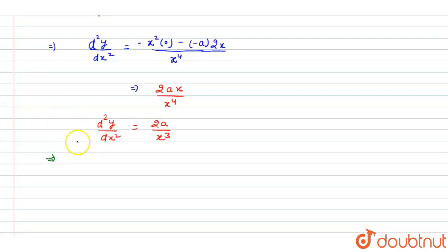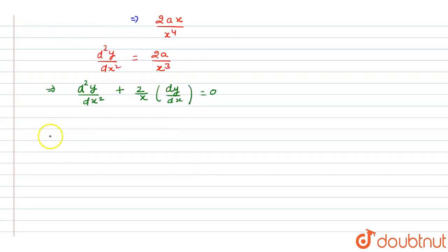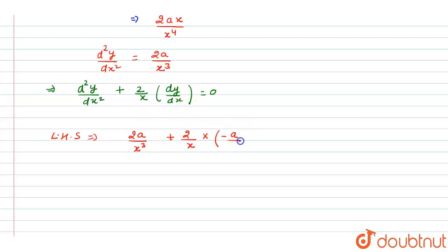The given differential equation is d²y/dx² + (2/x)(dy/dx) = 0. To prove this, we evaluate the LHS by substituting the values: d²y/dx² = 2a/x³, plus (2/x) times dy/dx = -a/x². This gives 2a/x³ minus 2a/x³.